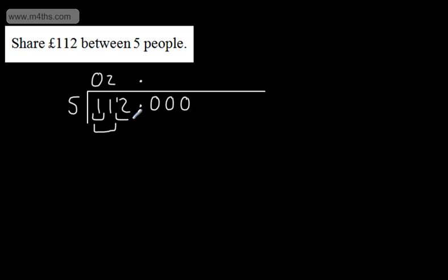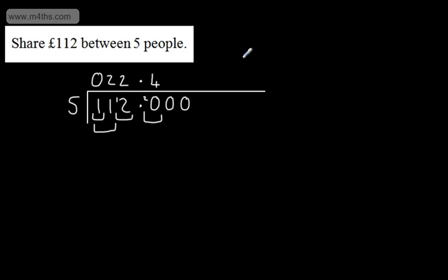I now ask myself: does 5 go into 12? Yes it does — it goes in twice, as that gives us 10, and we're left with a remainder of 2. I then put the 2 just here. My next question is: does 5 go into 20? The answer is yes, and it goes in exactly 4 times. Now it's gone in exactly 4 times, so there's no remainder and I can finish my division.